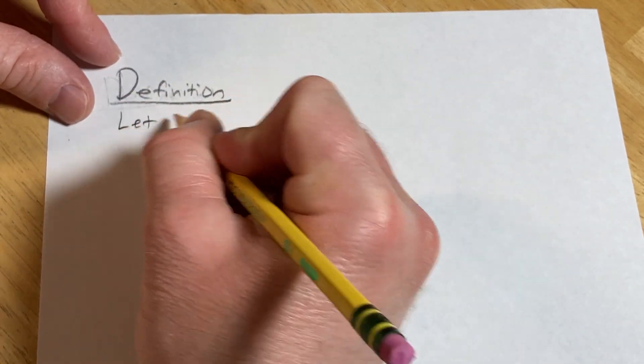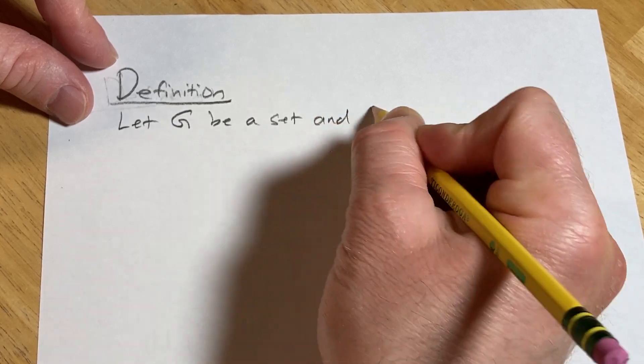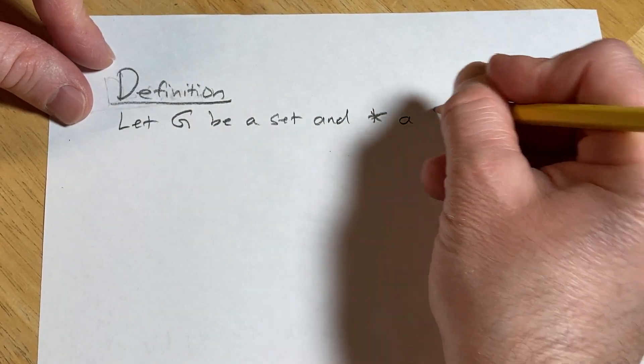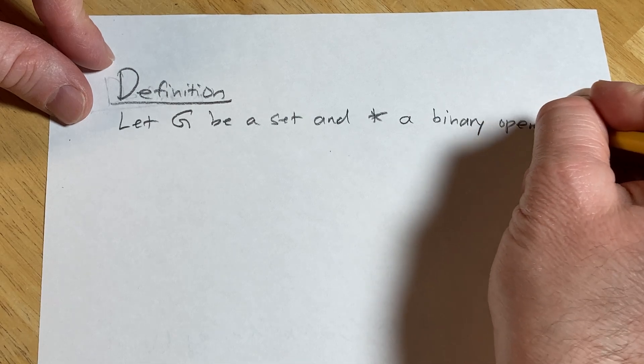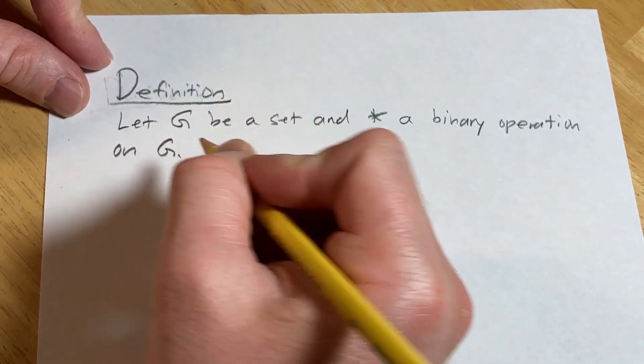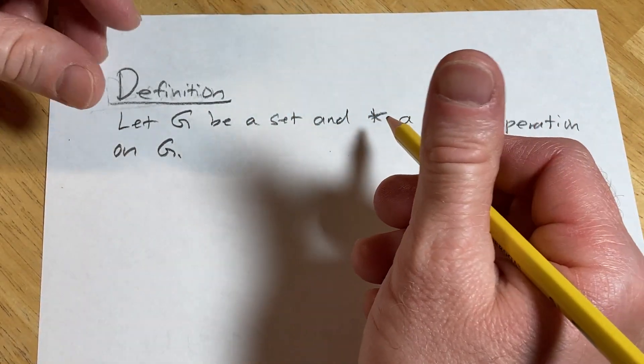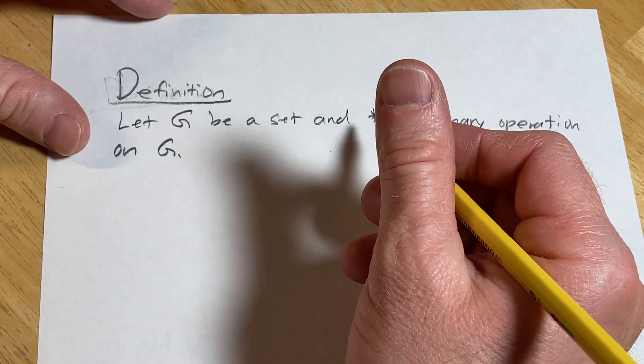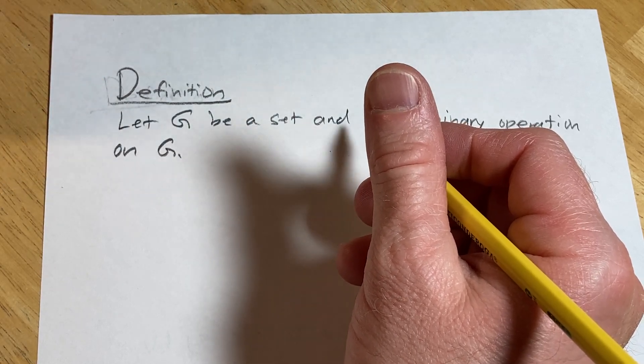Let G be a set and star a binary operation on G. All we have now so far is just closure. Basically it's a set with a binary operation. Like, if you have two integers, you add and get an integer. The set of integers is a set with a binary operation.